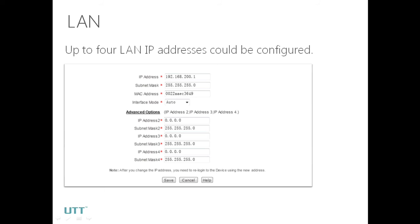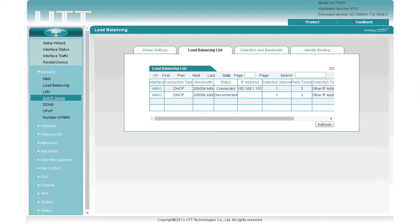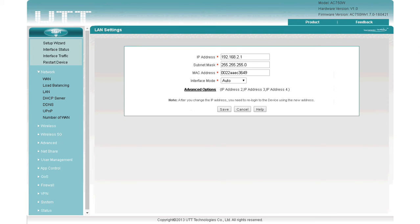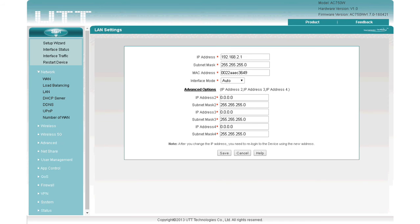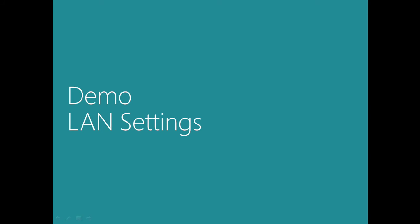Now let's get back to LAN. LAN is the third part of the Network menu. On the LAN settings page, we can configure IP address, subnet mask, MAC address, and interface mode. The IP address here is the LAN IP address of the router. If you click Advanced Options, you'll find that up to 4 LAN IP addresses can be configured — this is quite useful sometimes. The interface mode should be left as auto unless there is a special requirement. Click LAN to see these fields, then click Advanced Options to set additional IP addresses.